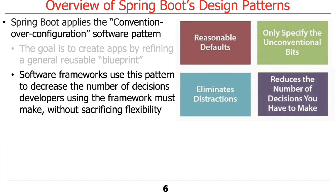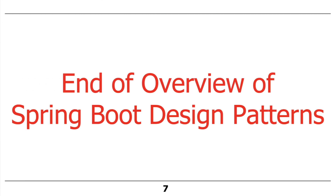Summarizing all of this: convention over configuration reduces the number of decisions you have to make, because what you get out of the box is usually close enough. And whenever you do need changes, there are ways to make them in very systematic and controlled ways. That's a quick overview of some of the key design patterns in Spring Boot — there's lots more where this came from, and we'll talk about that as we get further along.